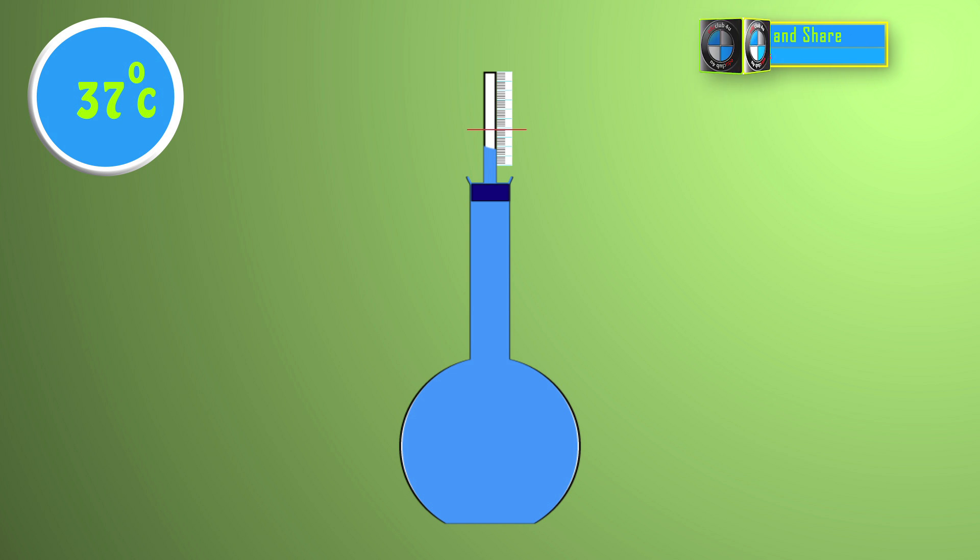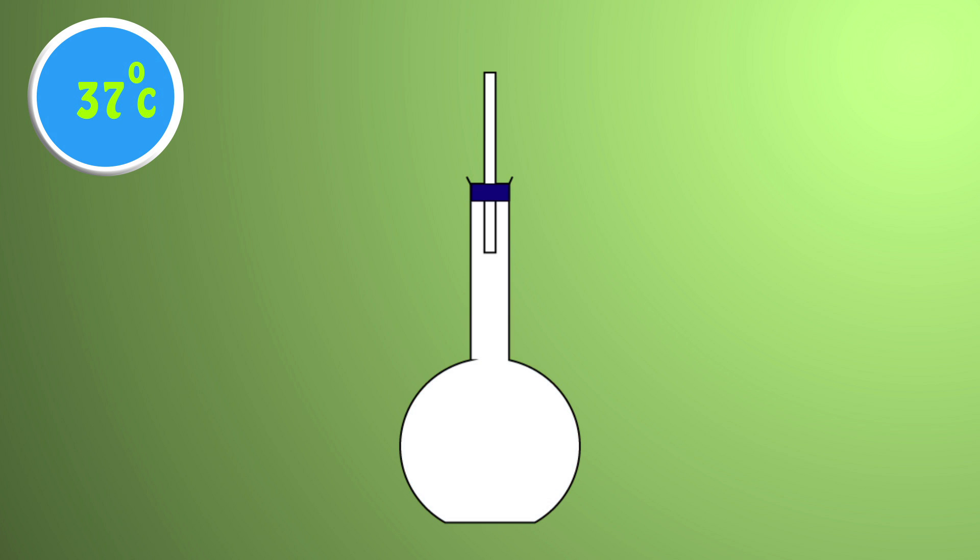Hence we have to record the thermal expansion of liquid relative to the container. Take a flat-bottomed flask having a capillary tube fixed at its mouth with the help of a cork. Fill this flask with colored water such that the level of water is at P on the scale.